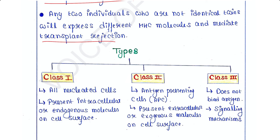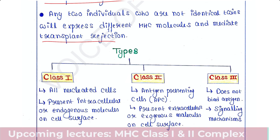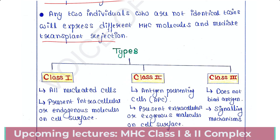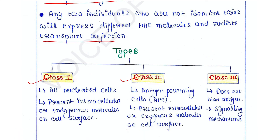There are three types of MHC found in our body: MHC class 1, MHC class 2, and MHC class 3. Class 1 MHC molecules are found in the plasma membrane of all nucleated cells in our body.